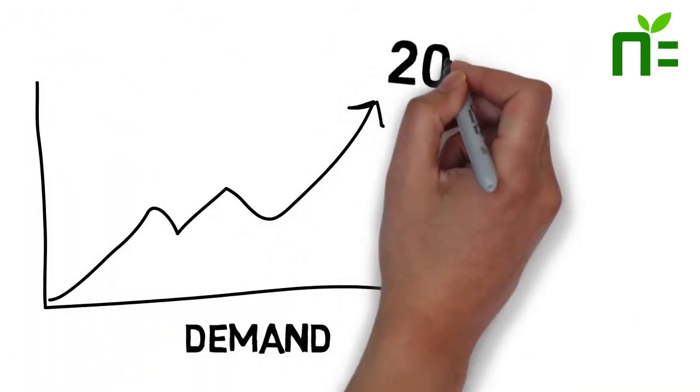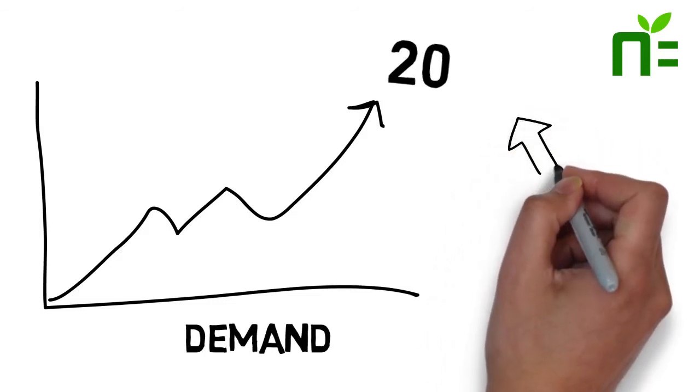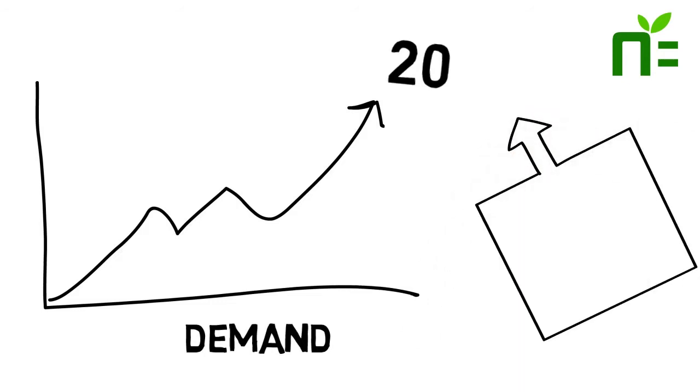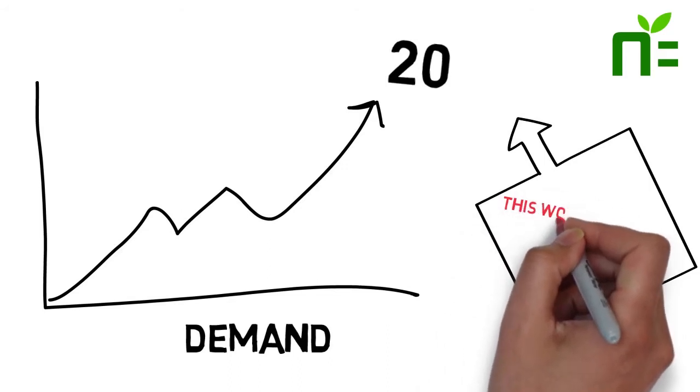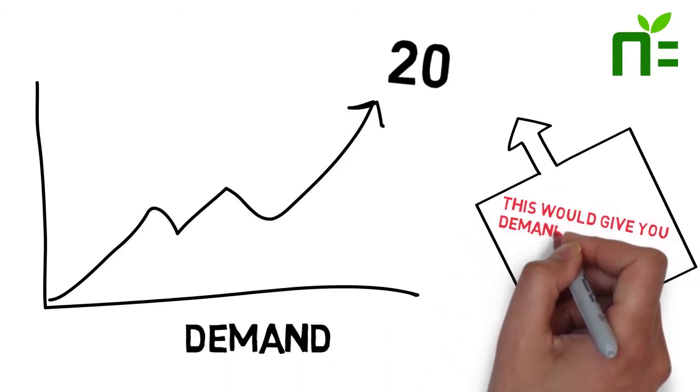Even though your average use is 10 or sometimes 5, the fact that you used energy at a rate of 20 kilowatts in one half-hour period would give you a demand charge of 20.